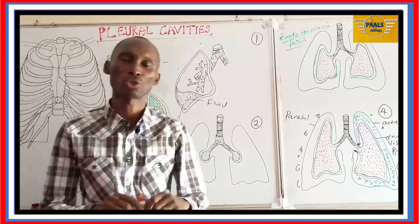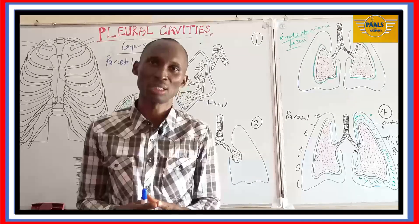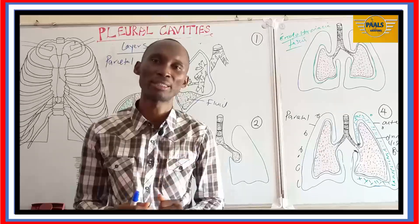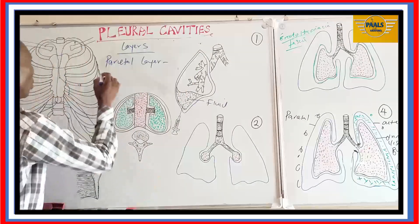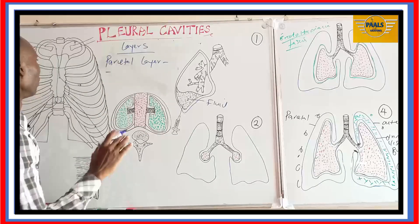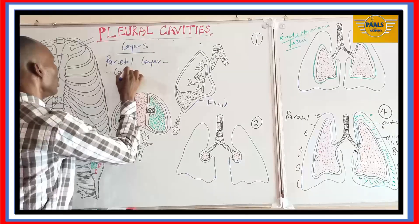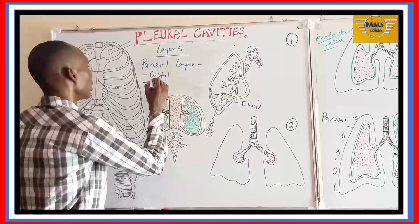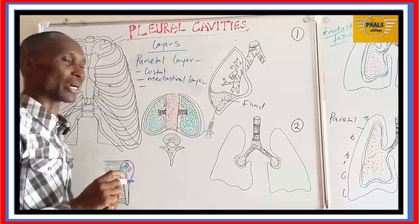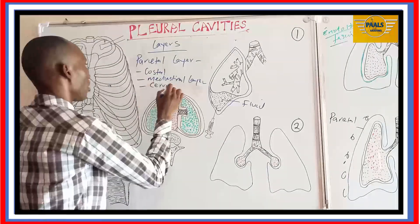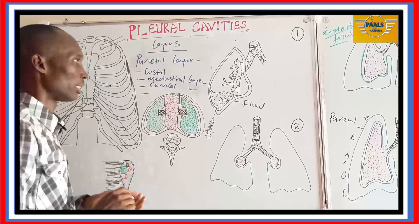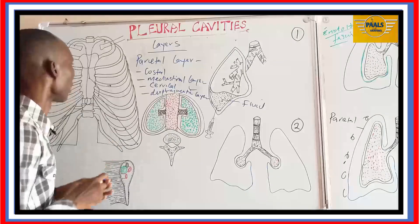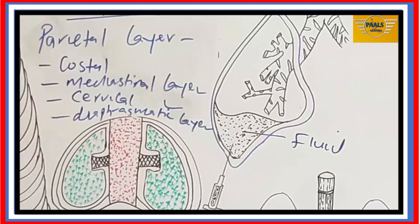Now we are going to subdivide this parietal layer into different subsections depending on the part of the thoracic cavity it is lining. By that division, we have about four different aspects of the parietal pleura. Number one, we have the area that covers the costal cartilages — we call it the costal layer. Number two, we have the area that covers the lateral aspects of the mediastinum — we call it the mediastinal layer. Number three, we have the area that covers the apex of the lungs — we call that the cervical layer. Number four, the one that covers the upper surface of the diaphragm — we call that the diaphragmatic layer.